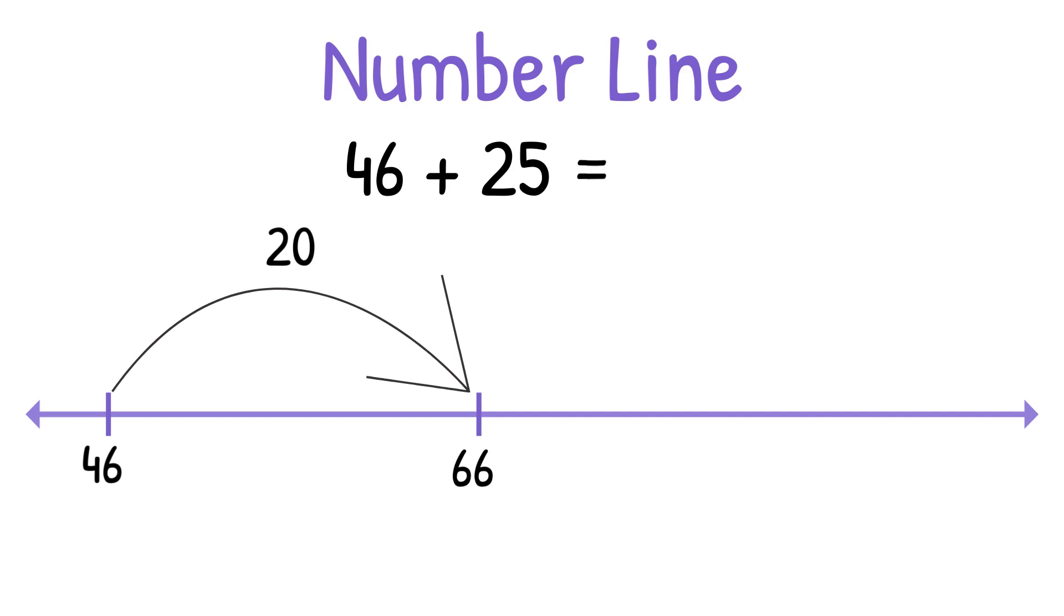Next, we're going to add the 1s, so 66 plus 5 equals 71. So for the third time, using three different strategies, we get our answer, 71.